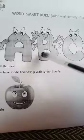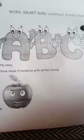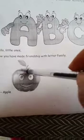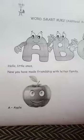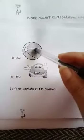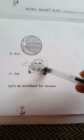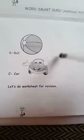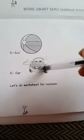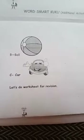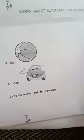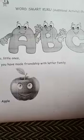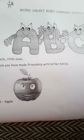So let's revise once again. A — Apple. B — Ball. And C — Car. This is a happy car. So here we will revise letter A, B, and C.